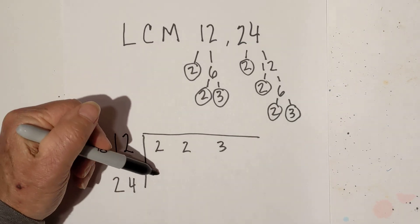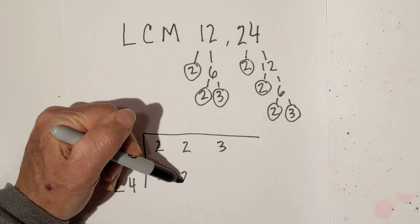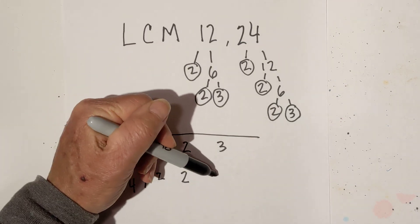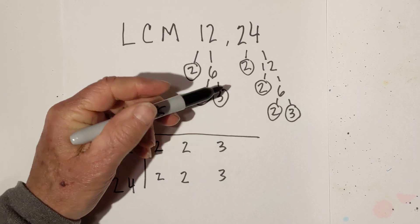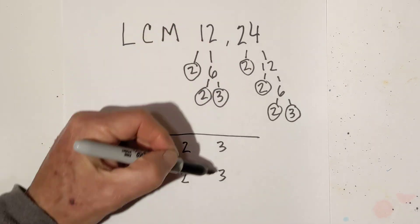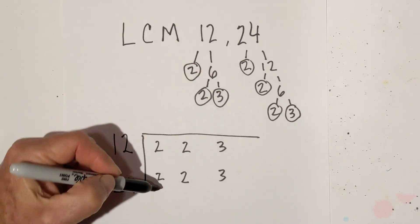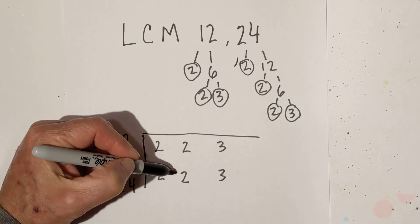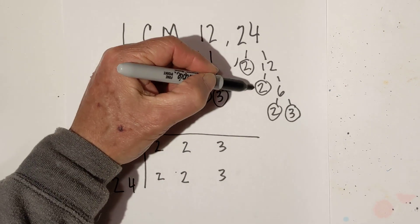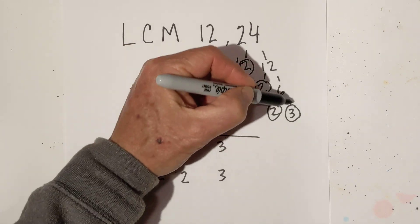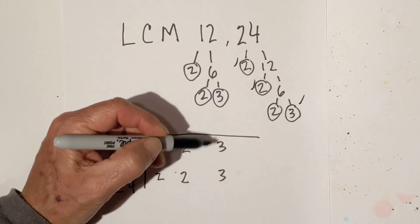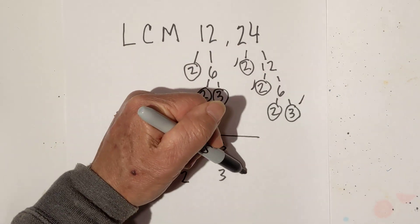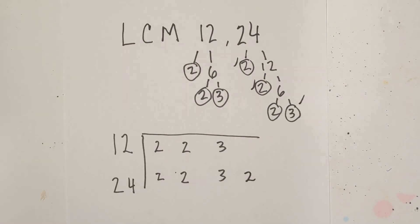And then we have 2, and 2, and 3, and we have one more 2. Because notice — I've used the 2, and I've used the 2, used this 3, and then I have one more 2. So there we go.